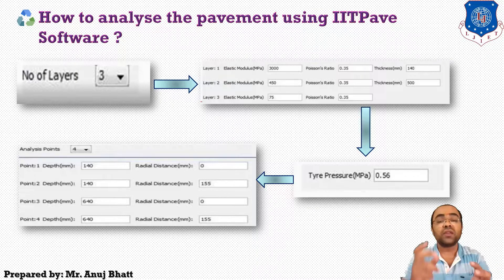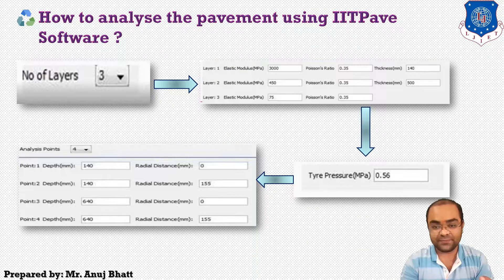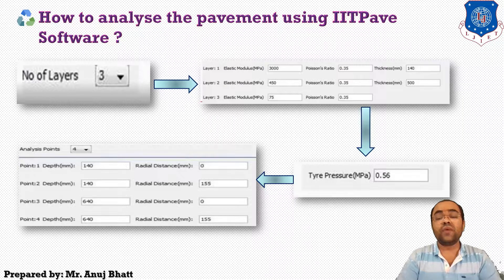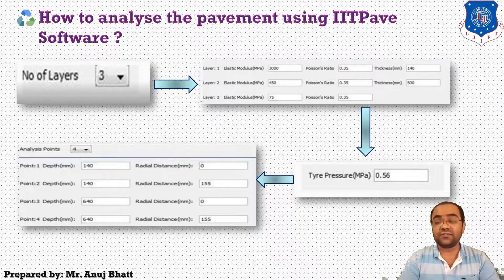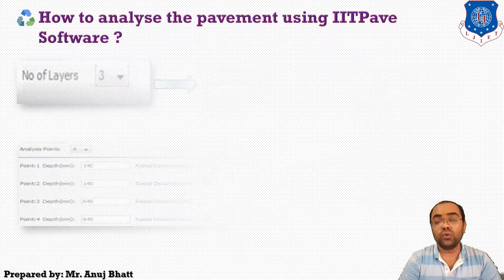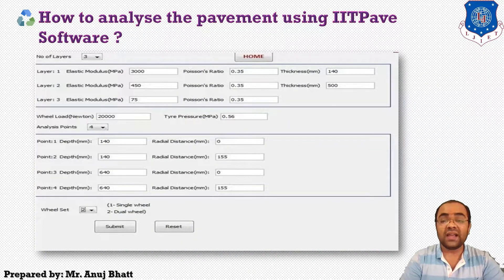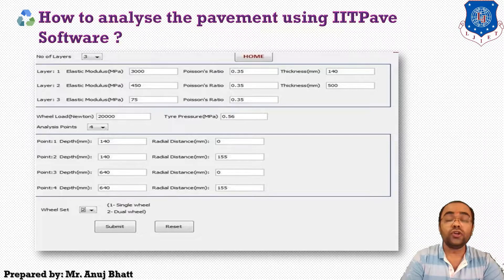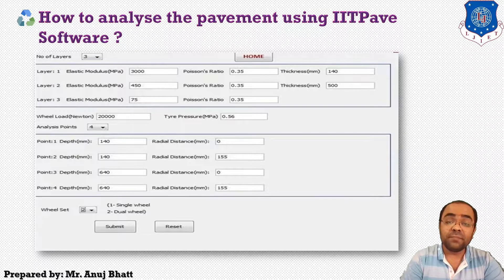After that, provide whether the analysis is for a single wheel load or for a double wheel load by selecting one or two from the drop-down menu beside the wheel set.